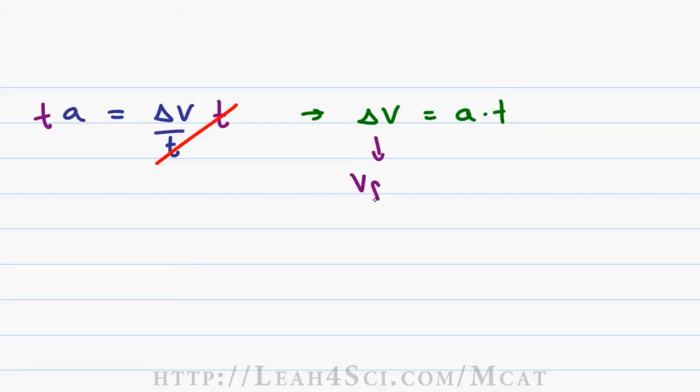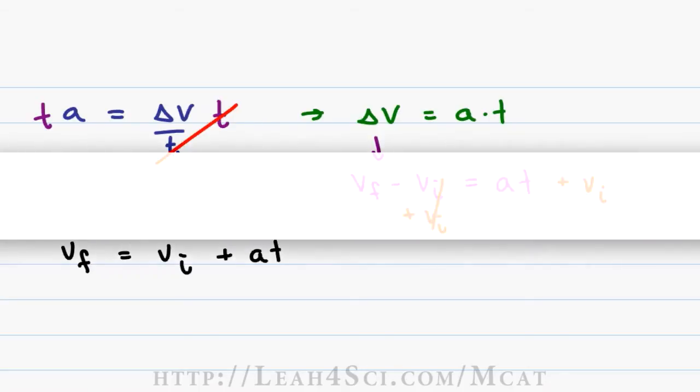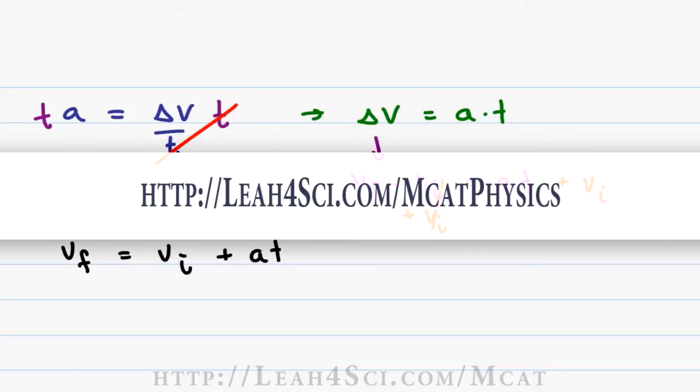Delta v is v final minus v initial equals a t. And now let's say we want v final, let's move v initial to the other side. So we'll do plus v initial plus v initial. Let's rewrite it into the form that you're probably most familiar with. v final is equal to v initial plus a t. This is the form that I initially studied when I learned this in physics. This is also the form that you'll see on my kinematics cheat sheet, which is on my website at leah4sci.com/mcatphysics.